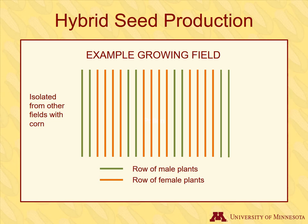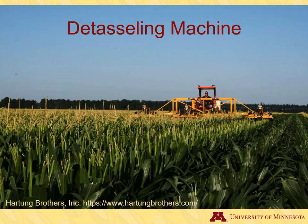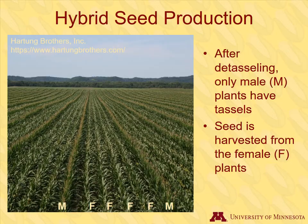The male and female rows alternate in the field, usually with three to six rows of female for every one to two rows of male. In this example plot, two rows of male plants alternate with four rows of female plants. The next step is to control the pollination process. This is done by detasseling the female inbred plants so that only the male inbred plants produce pollen. A specific machine is used for detasseling, and workers walk through the rows to get tassels that the machine has missed. After detasseling, the male rows still have tassels while the female rows don't. Seed is only harvested from the female plants.